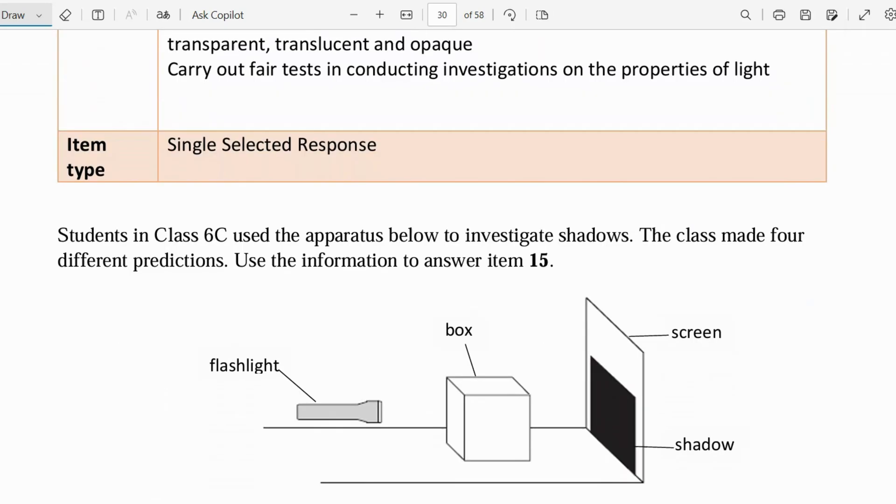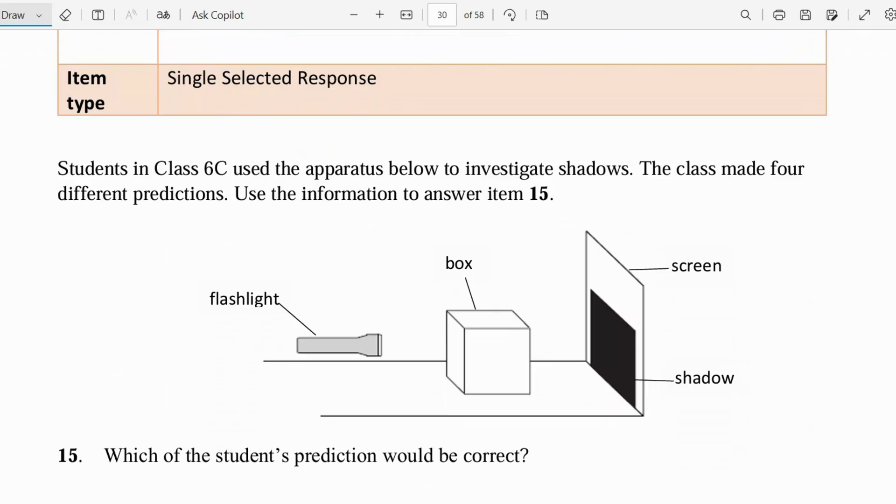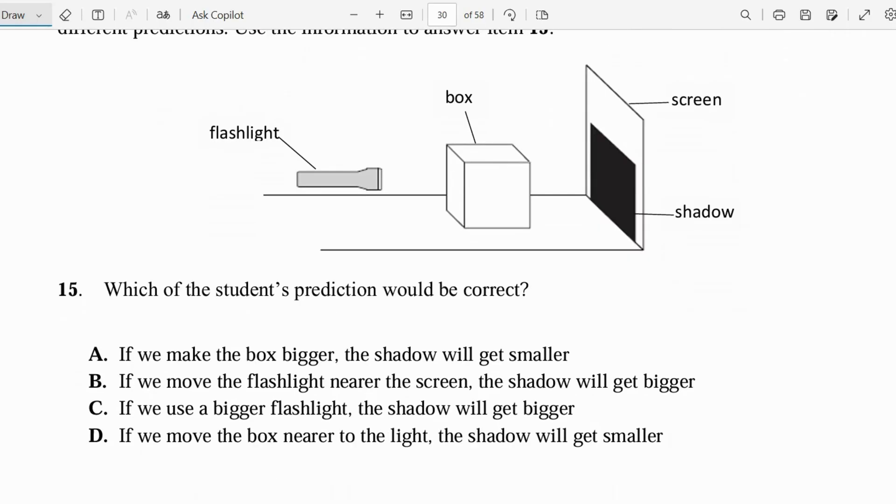Let's look at number 15. Students in class 60 use the apparatus below to investigate shadows. The class formed different predictions. Use the information to answer item 15. Which of the students' prediction would be correct? If we make the box bigger, the shadow will get smaller. If we move the flashlight nearer to the screen, the shadow will get bigger. If we use a bigger flashlight, the shadow will get bigger. And if we move the box near to the light, the shadow will get smaller. We can think of this as a projector.